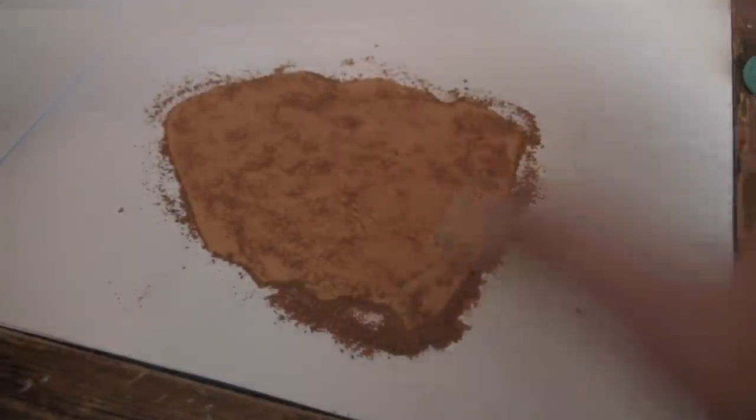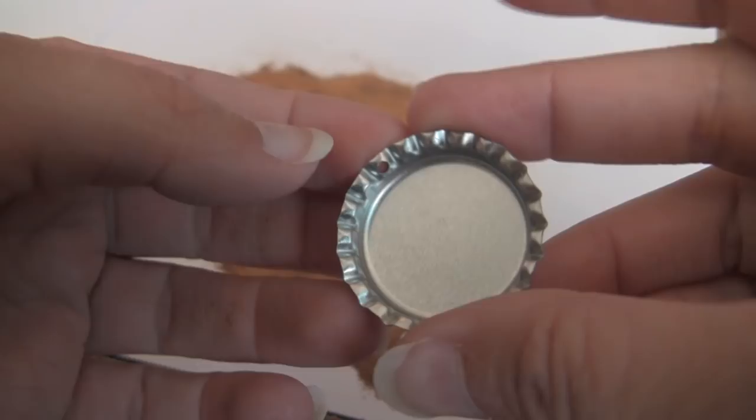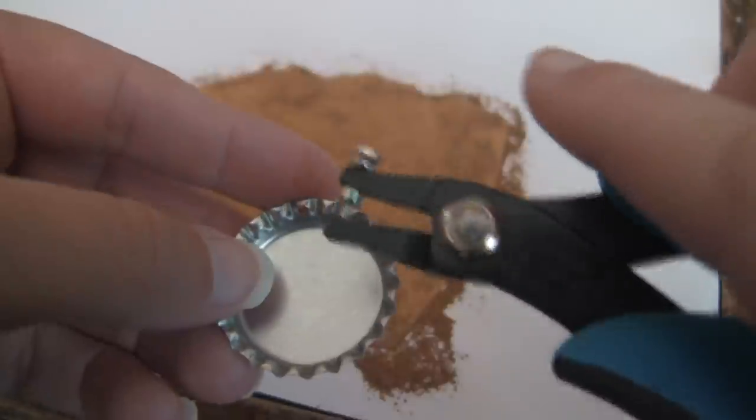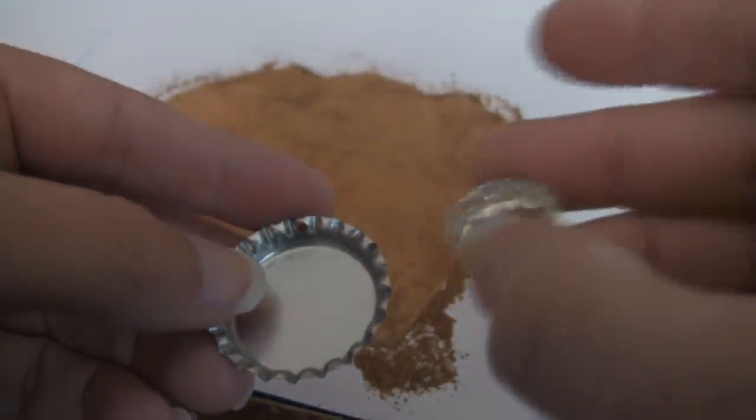I'm going to use my clay roller. I have a bottle cap and it has a hole in it. I made that with a little puncher tool that I bought when I bought the bottle caps.